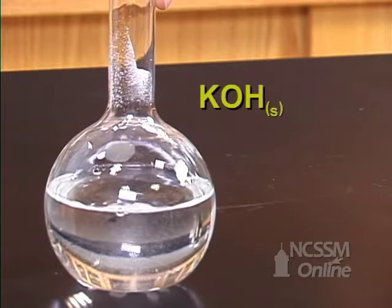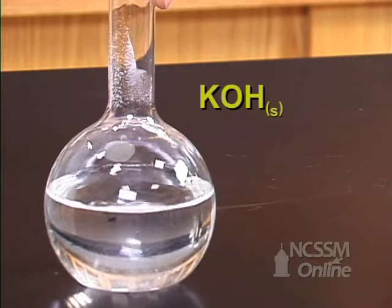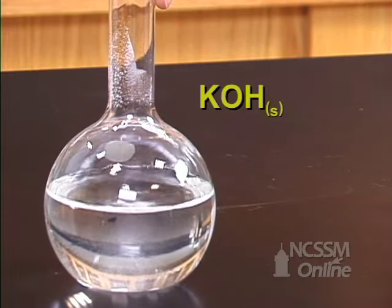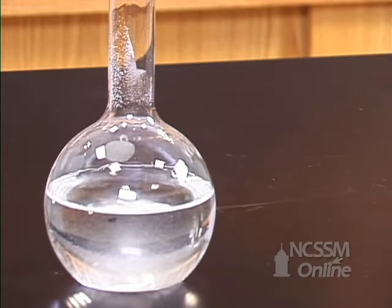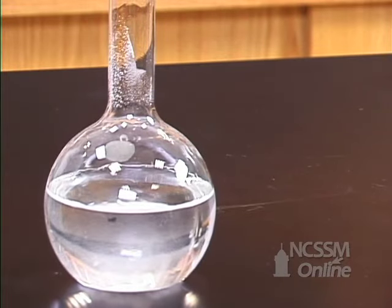If I add some potassium hydroxide, the potassium hydroxide acts as a catalyst to speed up the rate in which the glucose reacts with the oxygen in the air.